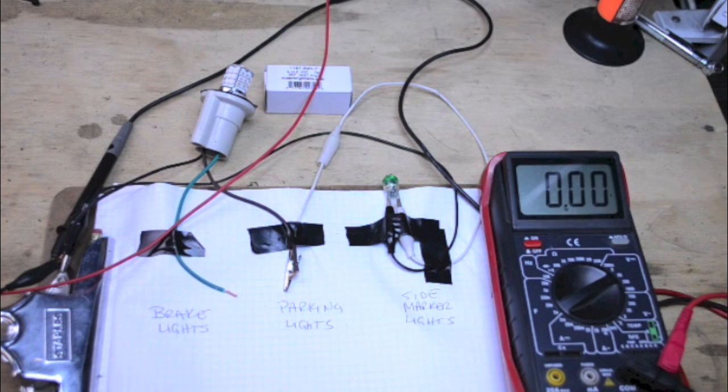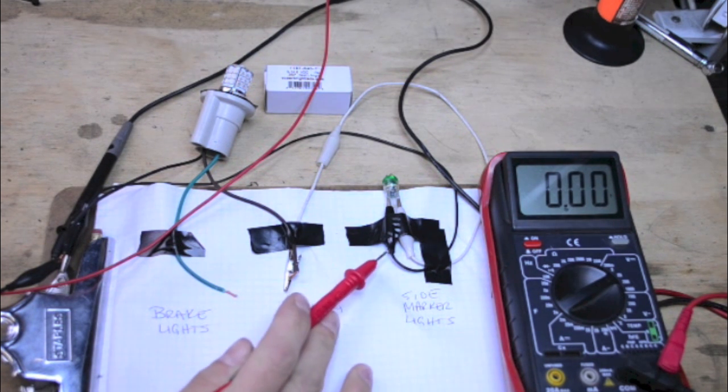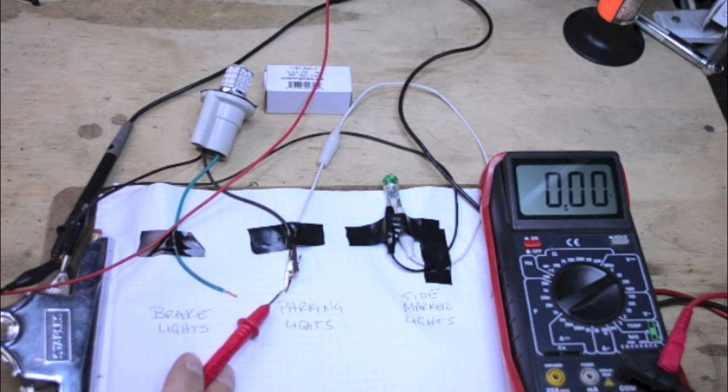This is a quick mock-up circuit we put together to demonstrate the issue we're seeing in the vehicle. This bulb here represents the side marker lights. This is the parking light feed coming from the headlight switch, and this is the brake light input coming from the brake switch.